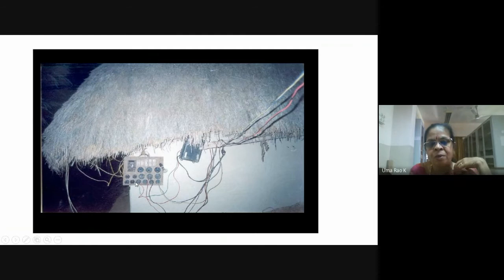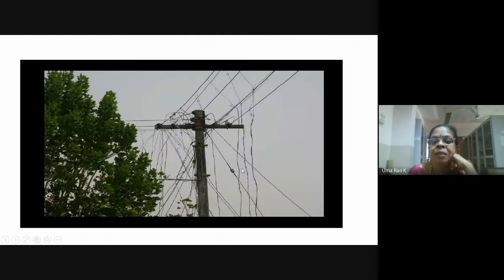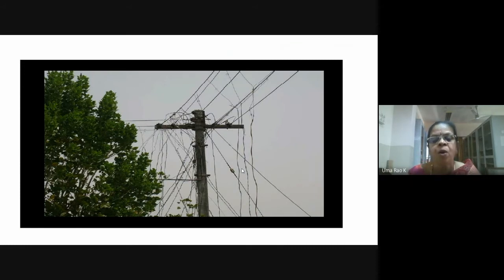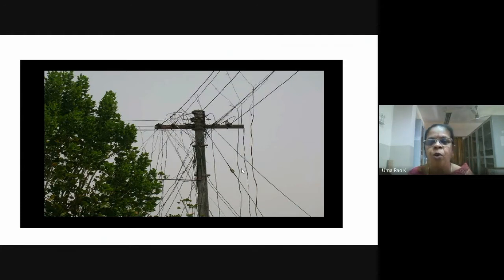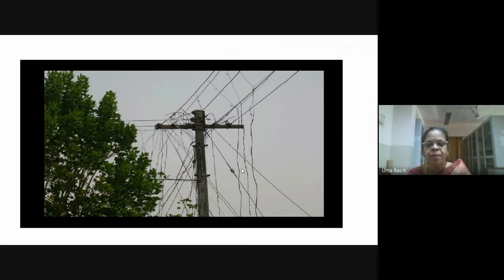Look at this — all the wires are jumbled up on a pole. This is a very common sight as you go down the road in heavily crowded metro cities like Delhi, Chennai, Bengaluru, and Kolkata. In a complex with many shops, people draw wires left, right, and center, making it very difficult to even trace a fault when one occurs.